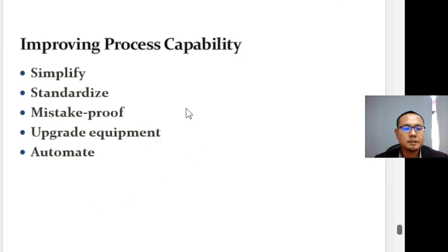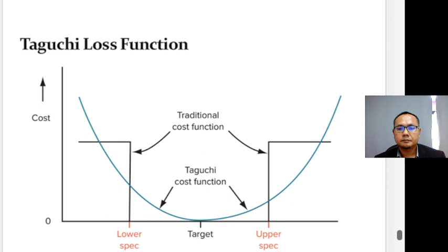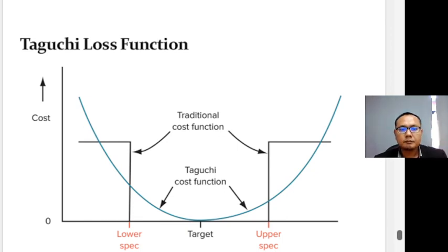We can improve process capability through several approaches: simplify, standardize, mistake-proof, upgrade equipment, or automate. Improving capability requires changing the process target value and reducing the process variability that is inherent in a process.